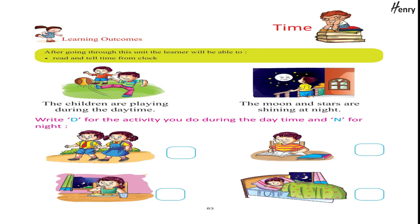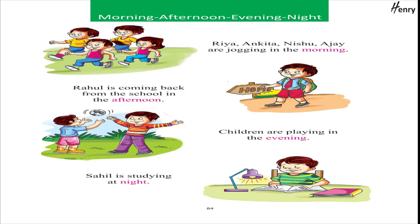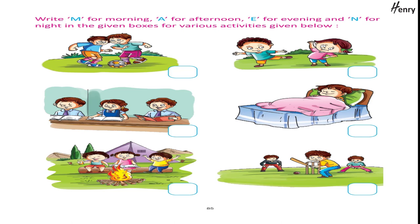Time. Learning outcomes: after going through this unit, the learner will be able to read and tell time from a clock. The children are playing during the daytime; the moon and stars are shining at night. Write D for the activity you do during the daytime and N for night. Morning, afternoon, evening, night — Rhea, Ankita, Nishu, and Ajay are jogging in the morning; Rahul is coming back from school in the afternoon; children are playing in the evening; Sahil is studying at night. Write M for morning, A for afternoon, E for evening, and N for night in the given boxes.